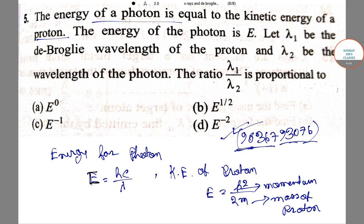Let lambda 1 be the de Broglie wavelength of the proton and lambda 2 be the wavelength of the photon. We need to find the ratio of lambda 1 to lambda 2. For the photon, we can write lambda 2 equals hc by E.